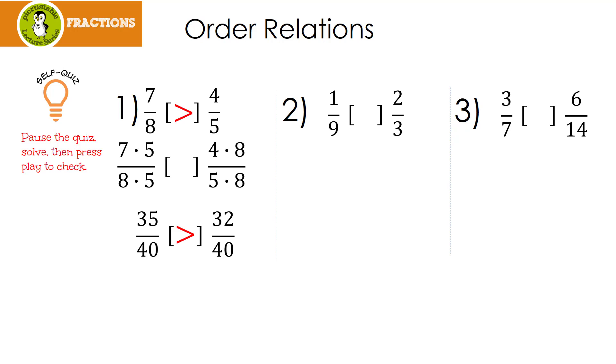Remember, the alligator is eating the bigger number. Let's look at number 2. Once again, I multiplied by each other's denominator. So I took 1 ninth times 3 over 3 and then 2 thirds times 9 over 9. This gives us 3 over 27 and 18 over 27.